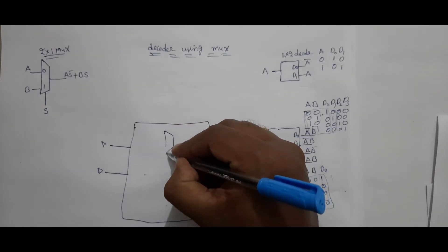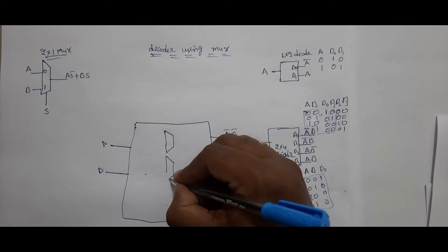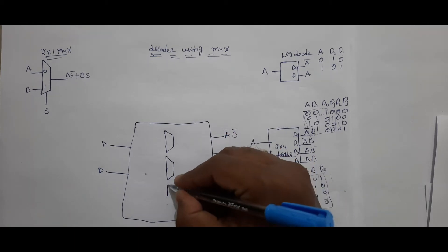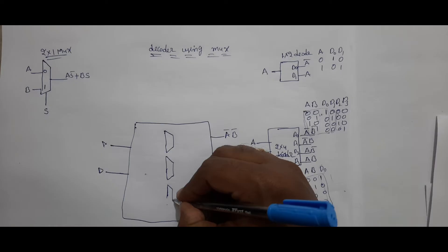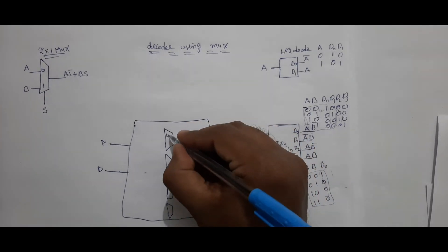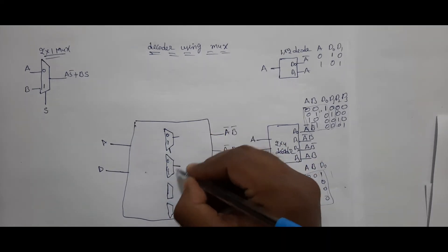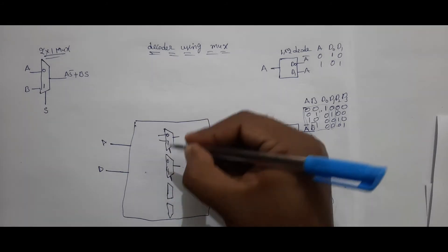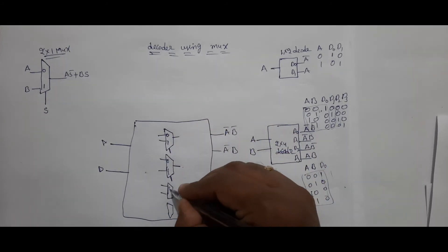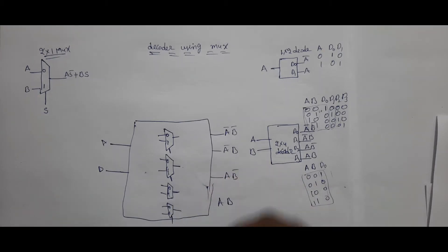I have four 2x1 MUXes here. Each MUX has inputs 0 and 1, a selection line, and an output. This MUX has two inputs and a selection line. Each of the four MUXes will produce one of the four decoder outputs.